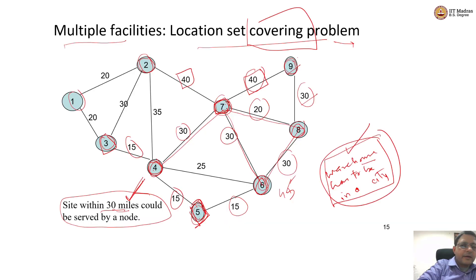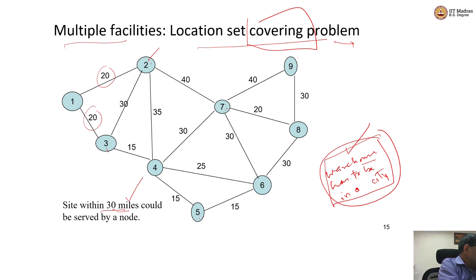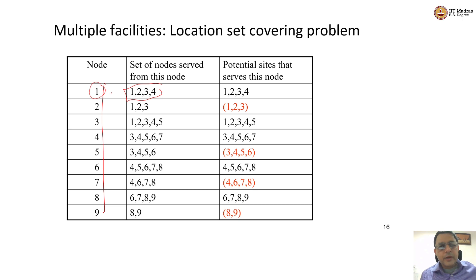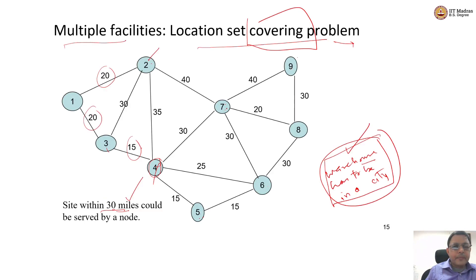Let us declutter the slide. If I am thinking of having a facility at node 1, obviously node 2 can be served at only 20 miles and node 3 can be served at only 20 miles. Can node 4 be served? It is 20 plus 15, which is 35 miles — so 4 cannot be served. Correcting that: only nodes 1, 2, and 3 can be served from having a facility at node 1. Node 4 cannot be served.